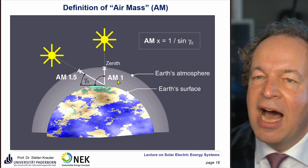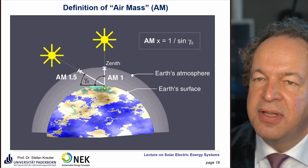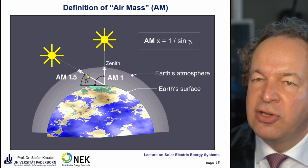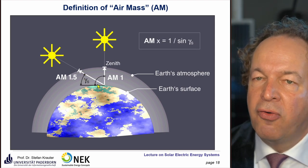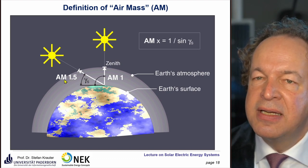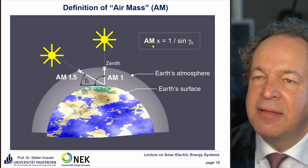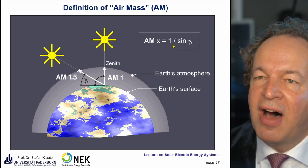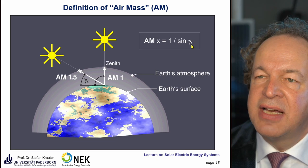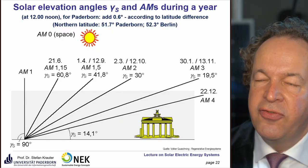This is called Air Mass 1 — the path through the atmosphere is traversed once. For different angles it's longer; for example, at an elevation angle of 41.5 degrees this is AM 1.5. You can calculate this as AMx = 1 divided by the sine of the sun elevation angle.